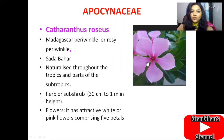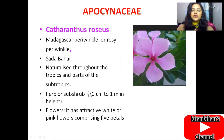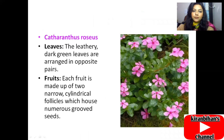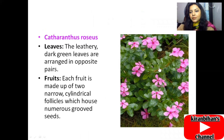Another name for Catharanthus roseus is 'Sada bahar,' meaning evergreen plant, naturalized throughout the tropics and parts of the subtropics. It is an herb or shrub 30 centimeters to one meter in height. Its flowers are very attractive, white or pink, comprising five petals. The leaves are leathery, dark green, arranged in opposite pairs — they are strong and firm in nature.